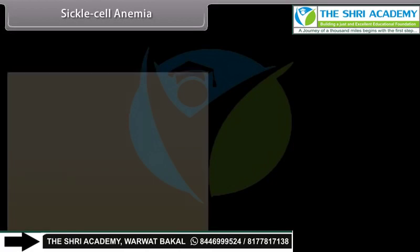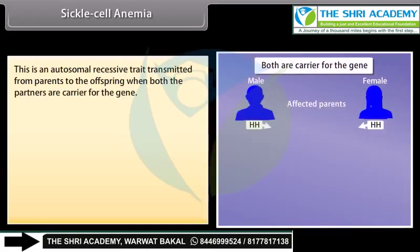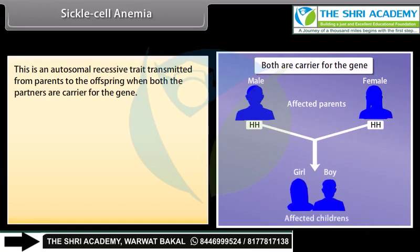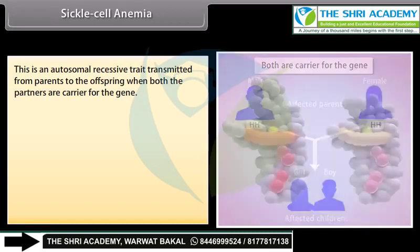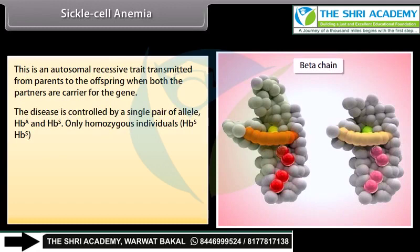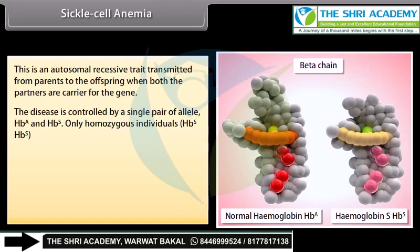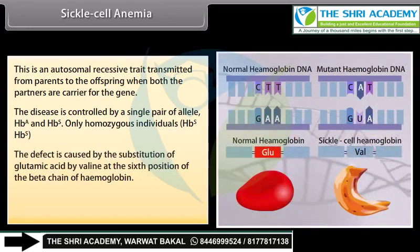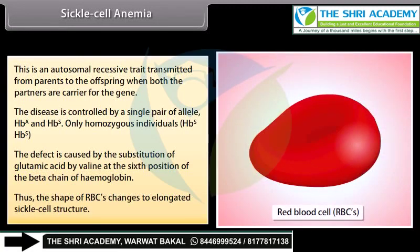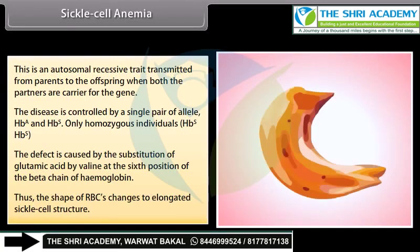Sickle cell anemia: This is an autosomal recessive trait transmitted from parents to offspring when both partners are carriers. The disease is controlled by a single pair of alleles HbA and HbS; only homozygous individuals (HbS HbS) are affected. The defect is caused by the substitution of glutamic acid by valine at the sixth position of the beta chain of hemoglobin, causing the shape of RBCs to change to an elongated sickle cell structure.